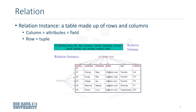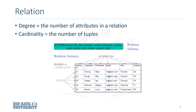A relational instance is a table made up of rows and columns. The columns are the attributes or fields, and the rows are tuples. Degree refers to the number of attributes or columns in a relation. Cardinality refers to the number of tuples or rows. In this example, the degree is six because there are six columns, and the cardinality is five because there are five tuples or rows.